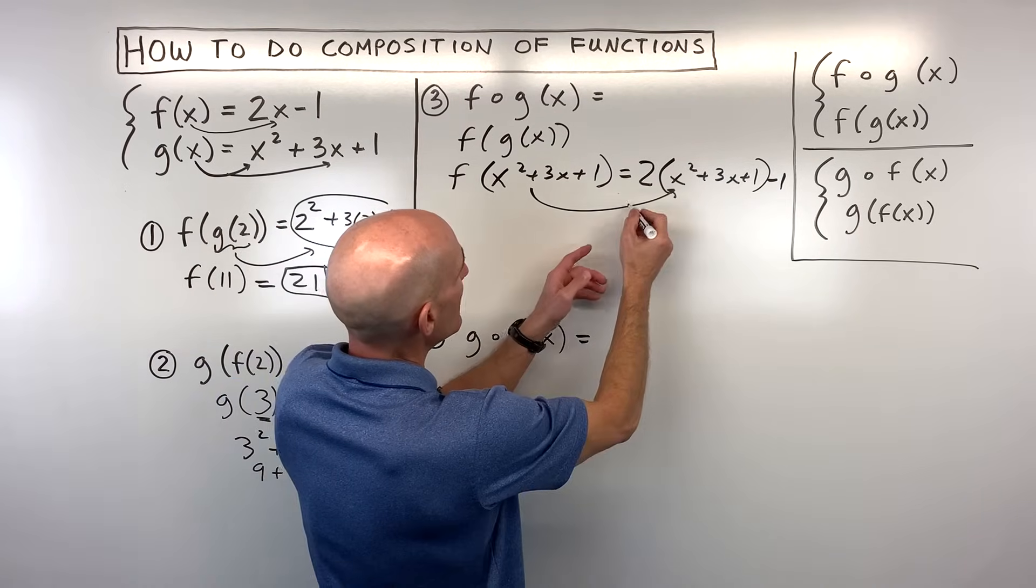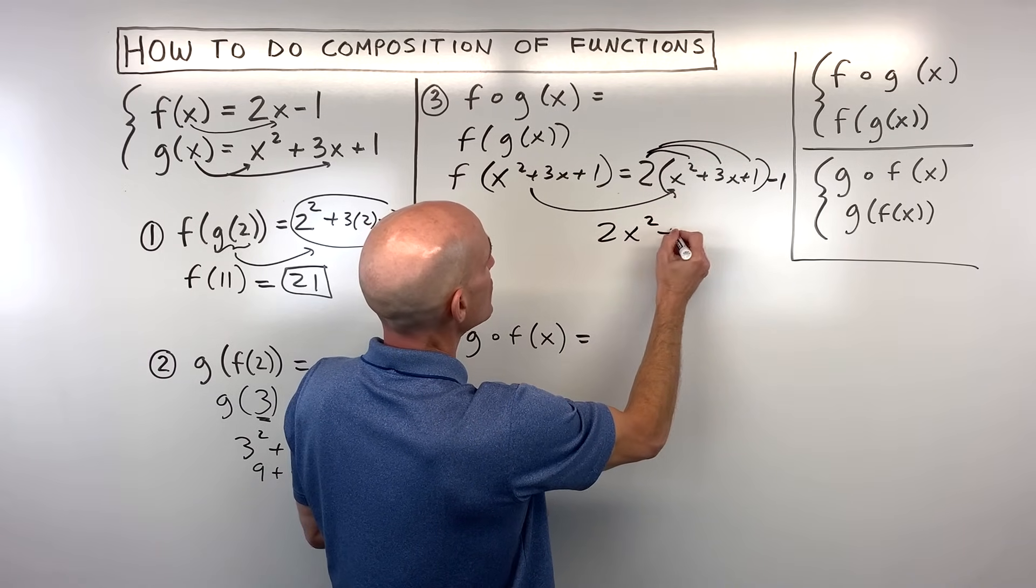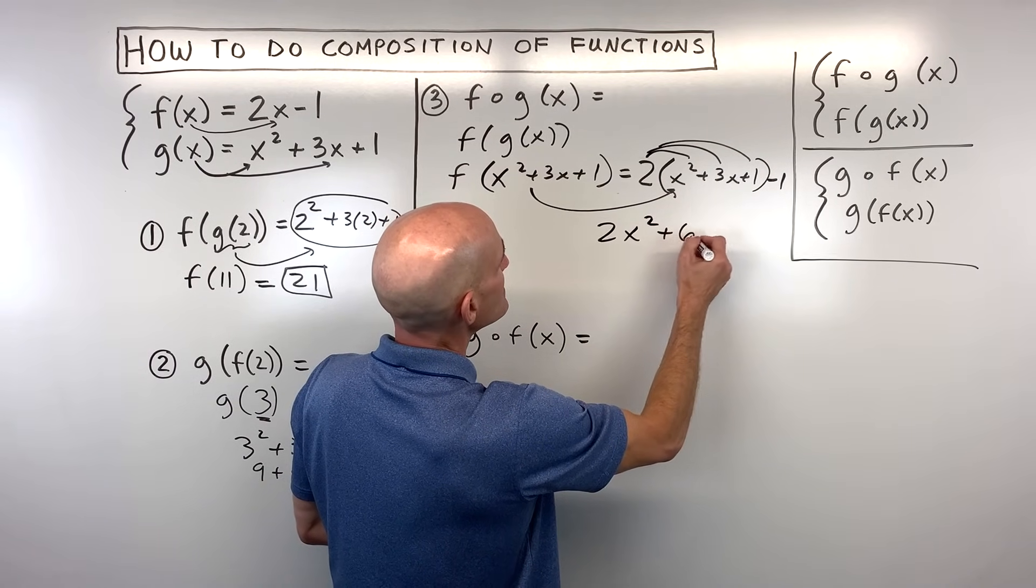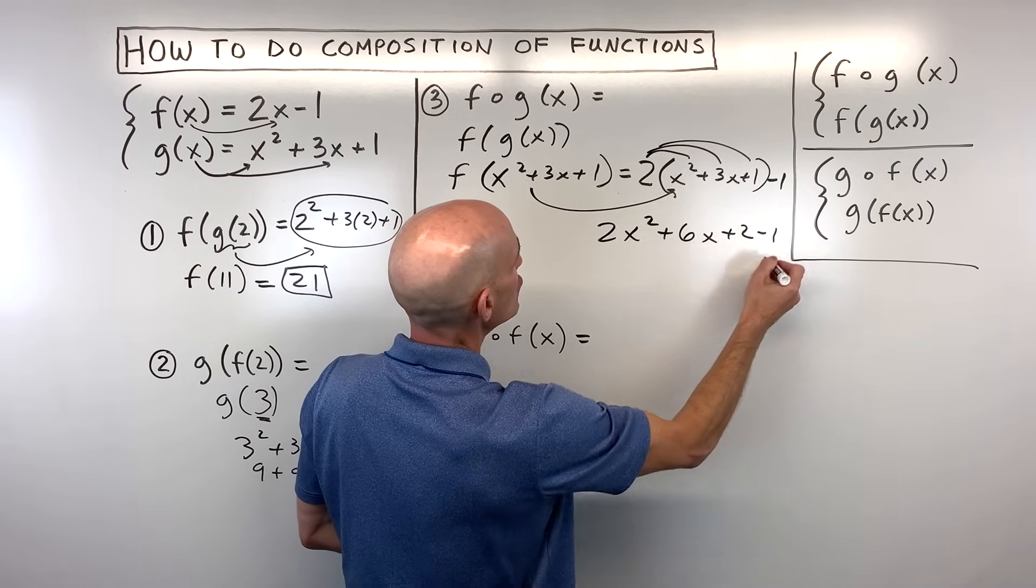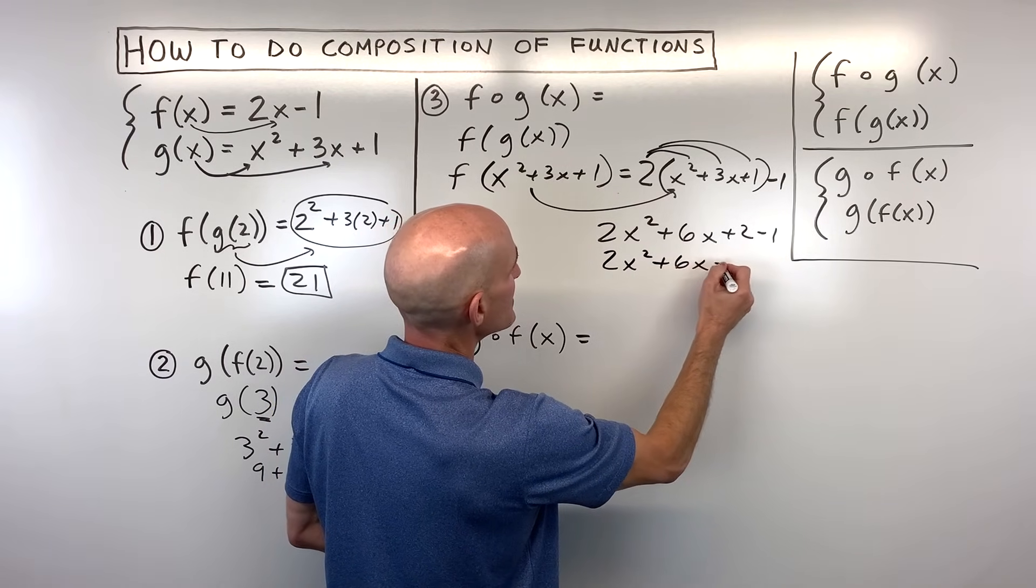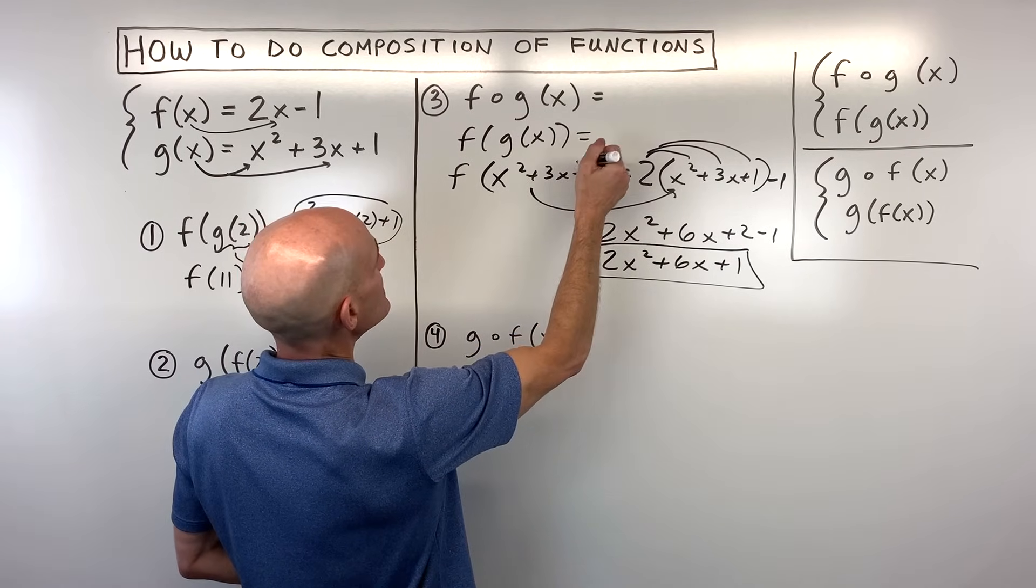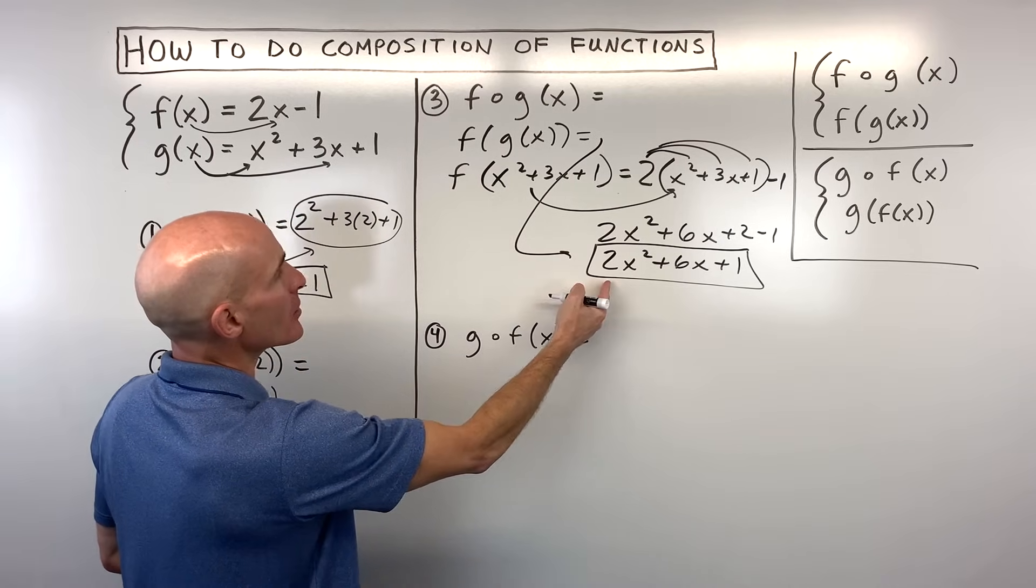Okay so now if we simplify what do we get? We're going to distribute the 2. So that's going to give us 2x squared plus 6x plus 2 minus 1. Or we could write this as 2x squared plus 6x plus 1. So that's what f of g of x is equal to right here.